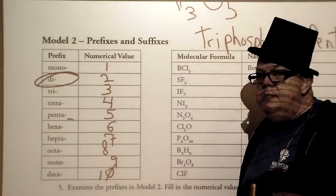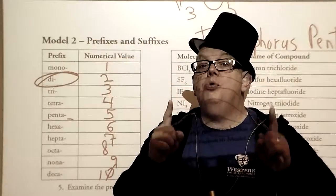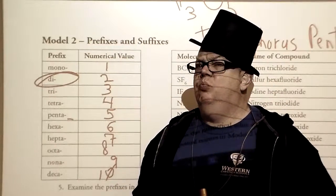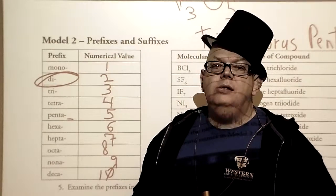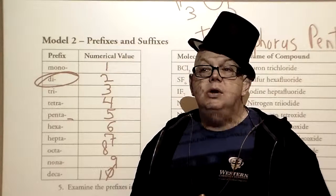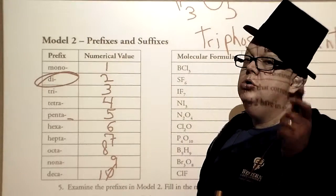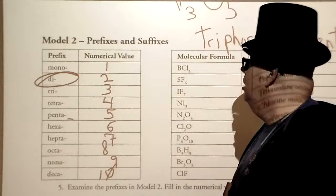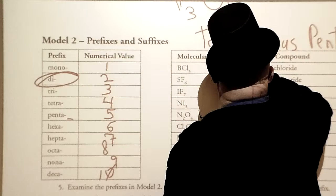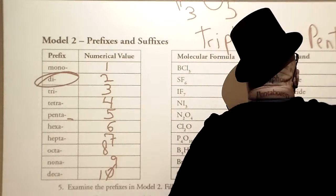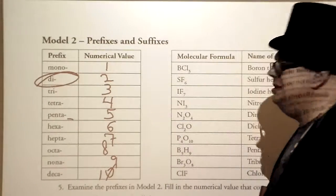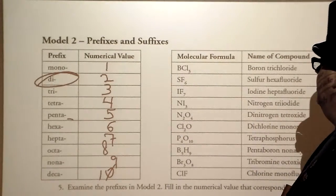So again, this is naming molecular compounds. They both have to be non-metals. You'd say, but wait, what's a non-metal? Metals would include things like copper and silver and mercury and sodium. Look up your notes on your periodic table.